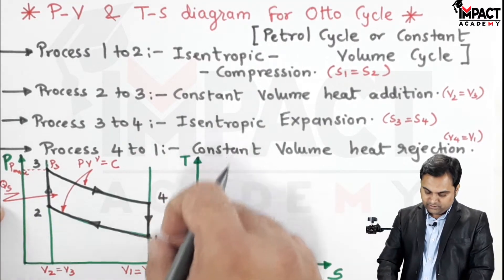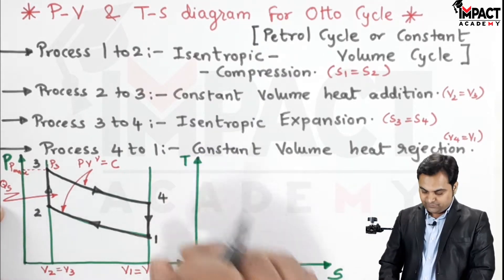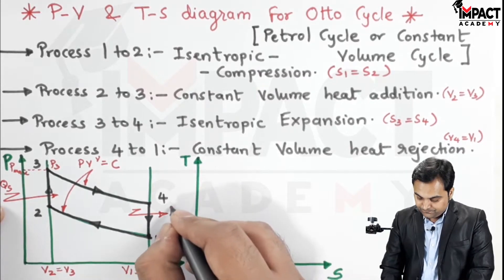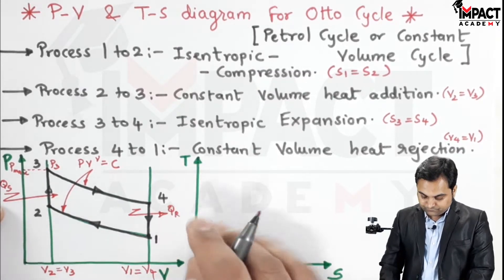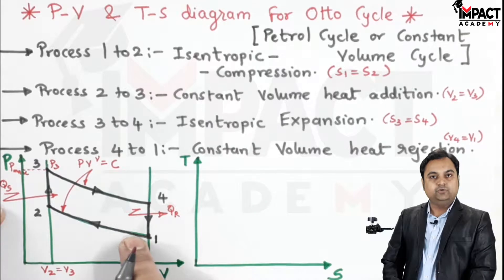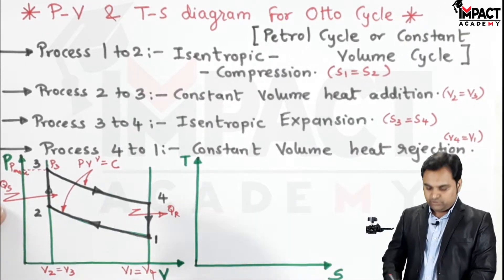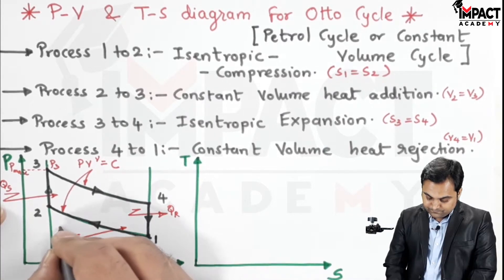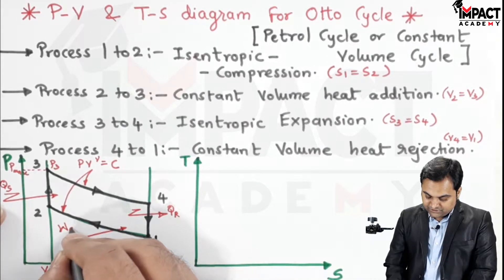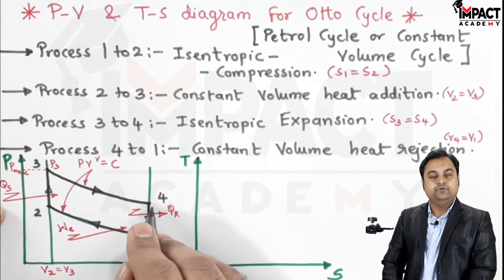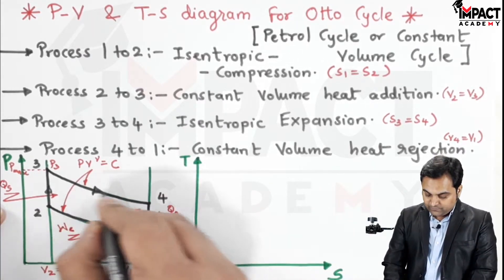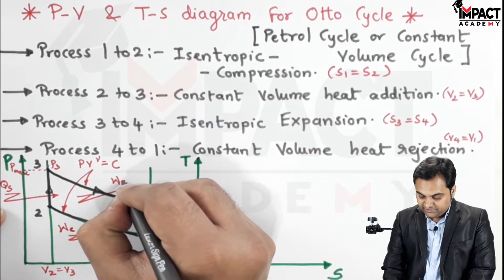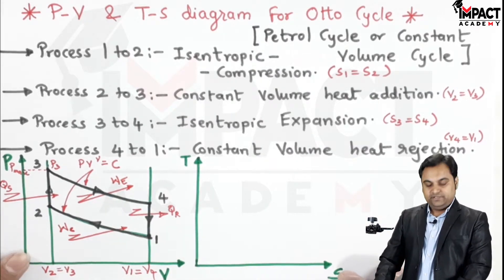Process 4 to 1 is the constant volume heat rejection process — heat is rejected during this process. During process 1 to 2, since it is compression, work is supplied to the system — that is the work of compression. During process 3 to 4 we get the output work from the system, W_e, the work obtained during the expansion process.